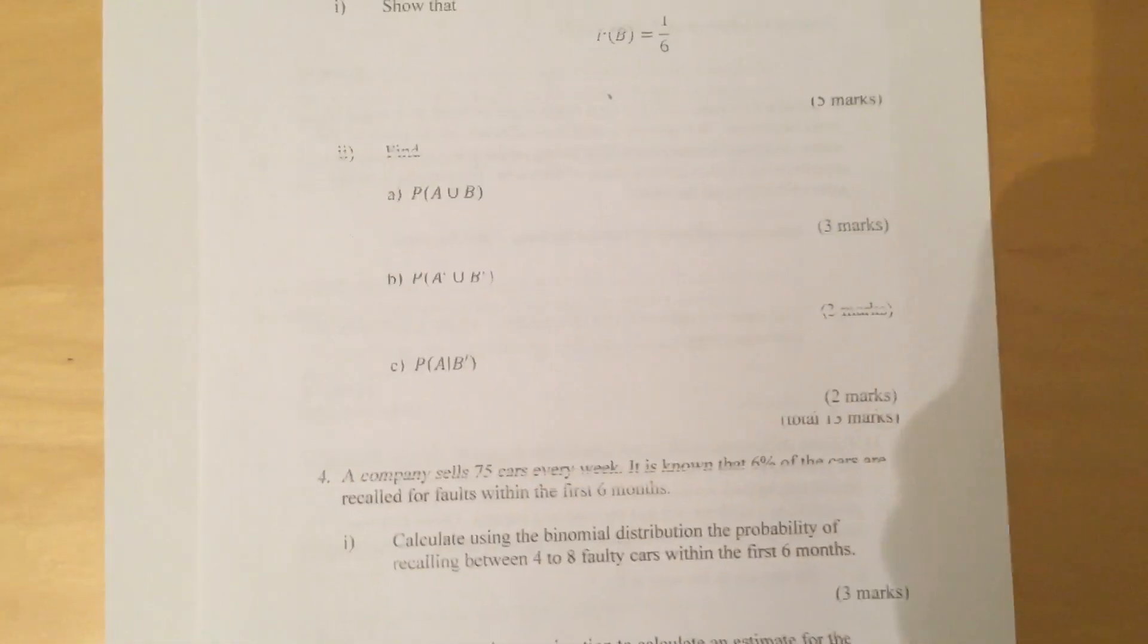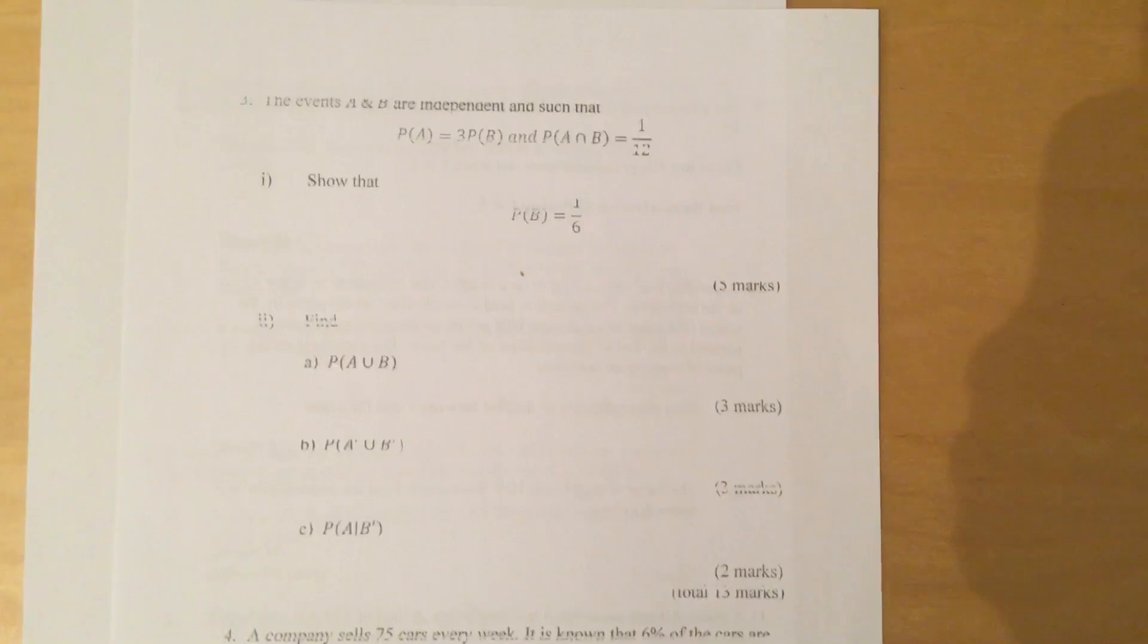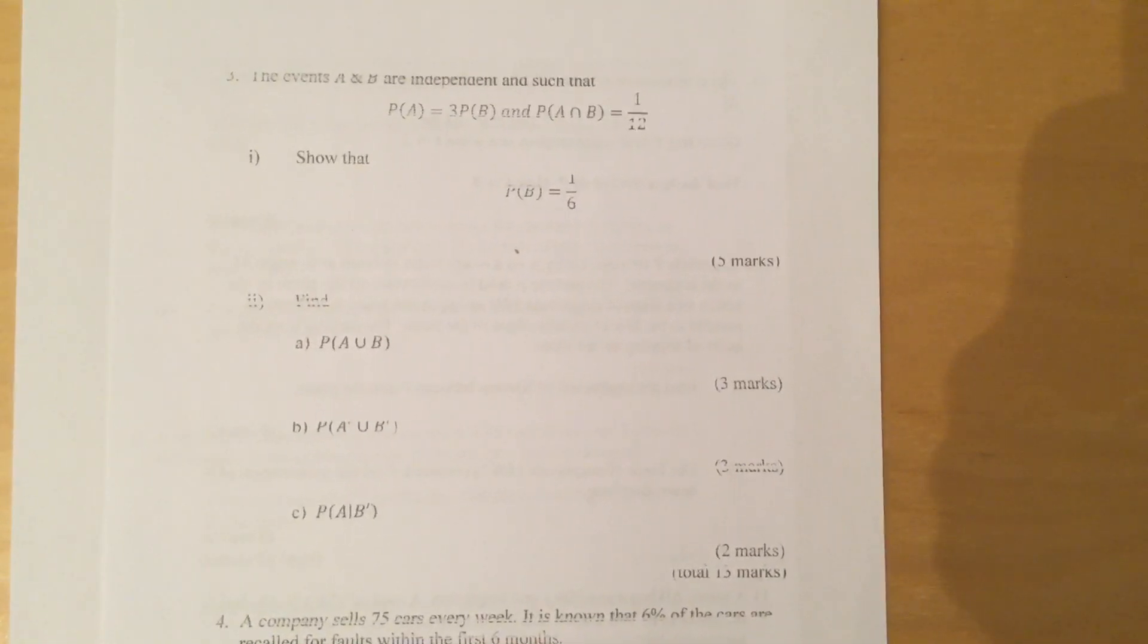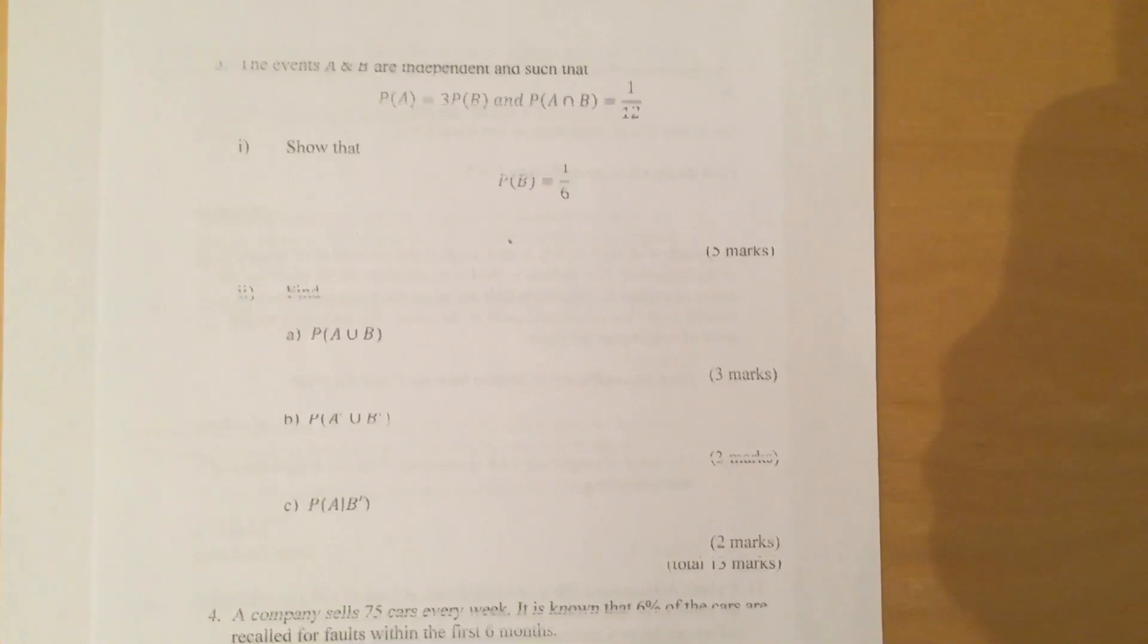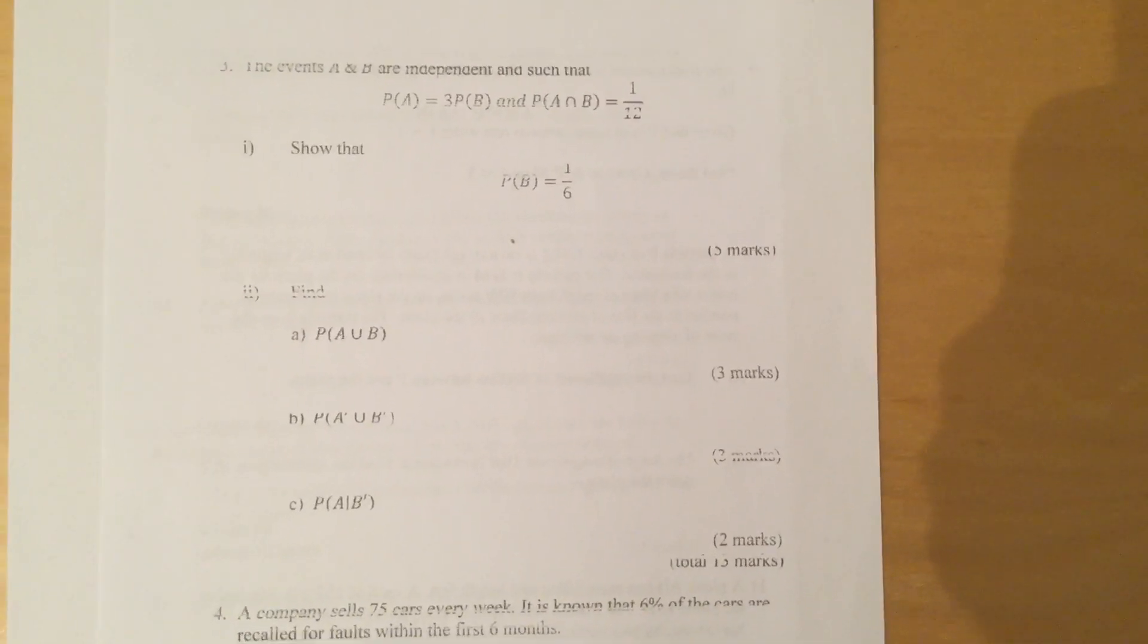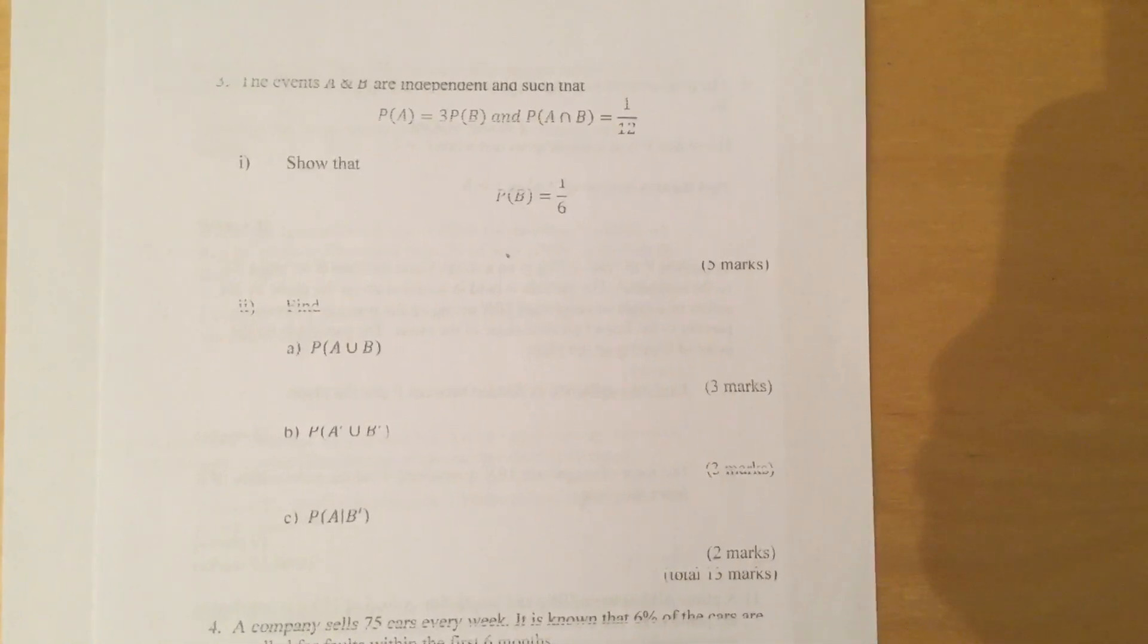Question 3: The events A and B are independent and such that probability of A is equal to 3 times the probability of B, and the probability of B is equal to 1 over 12. Part 1: Show that probability of B is equal to 1 over 6.